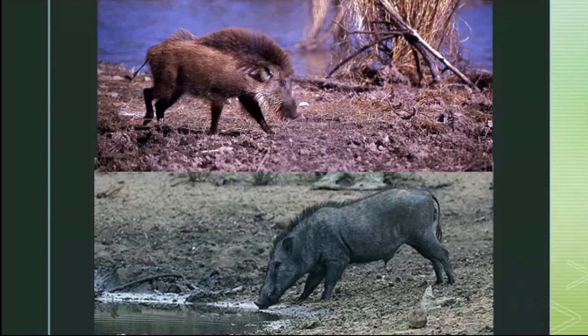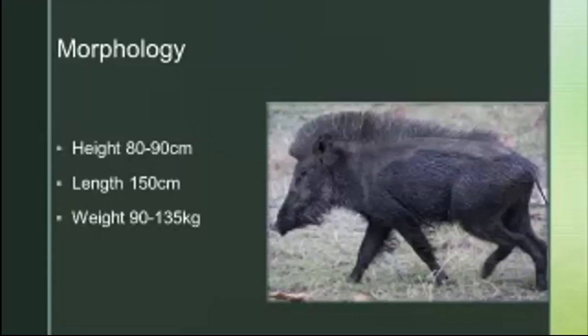Another morphological difference is their size. They're quite a tall subspecies — they can be up to three feet at shoulder height, about 90 centimetres, and they can be five feet long, around 150 centimetres in length.